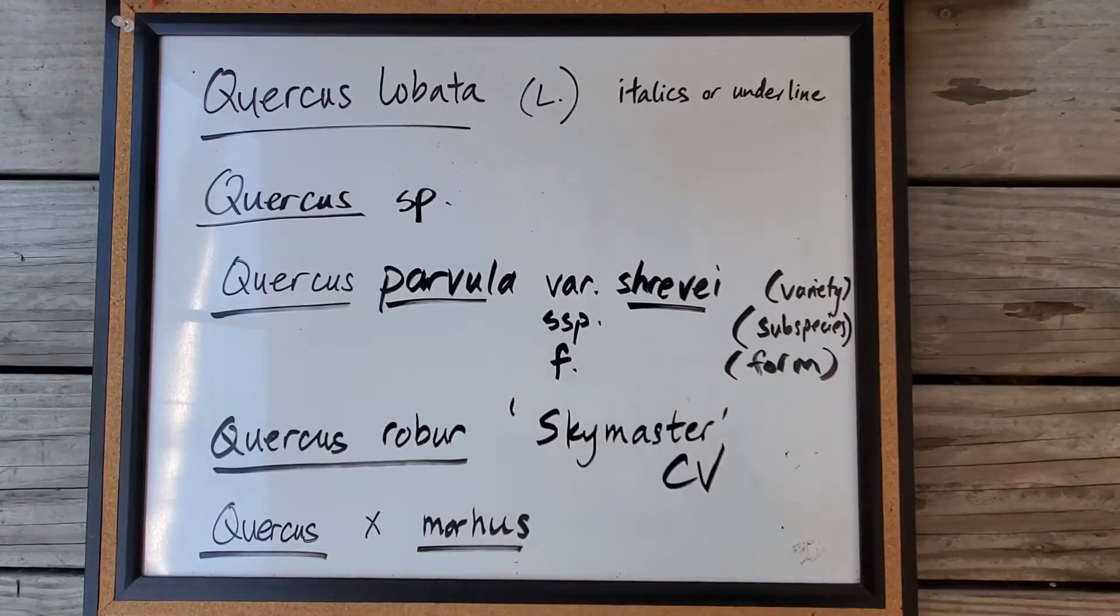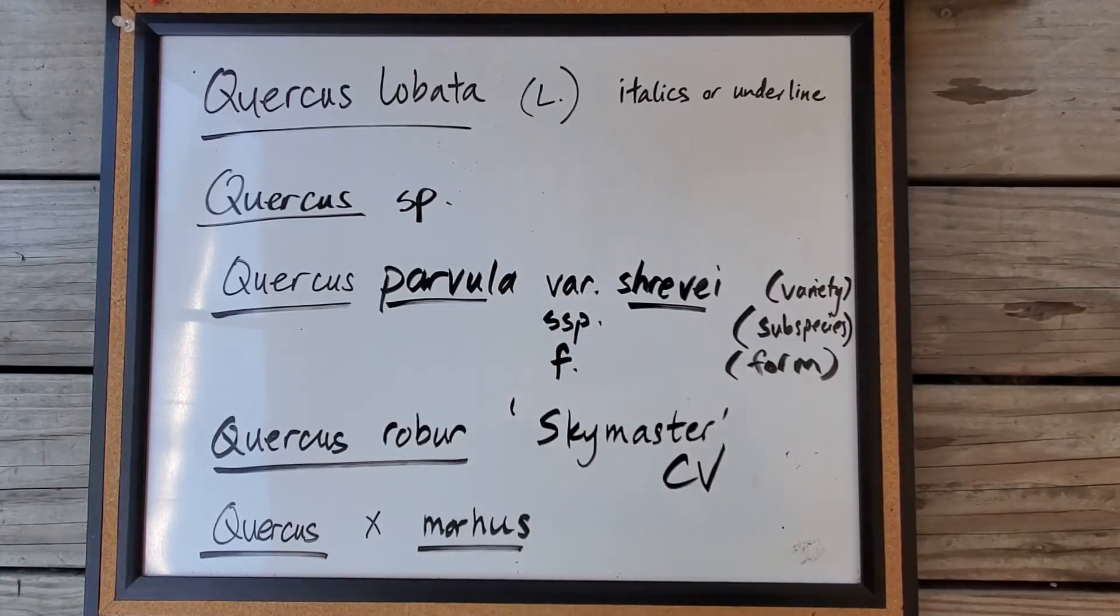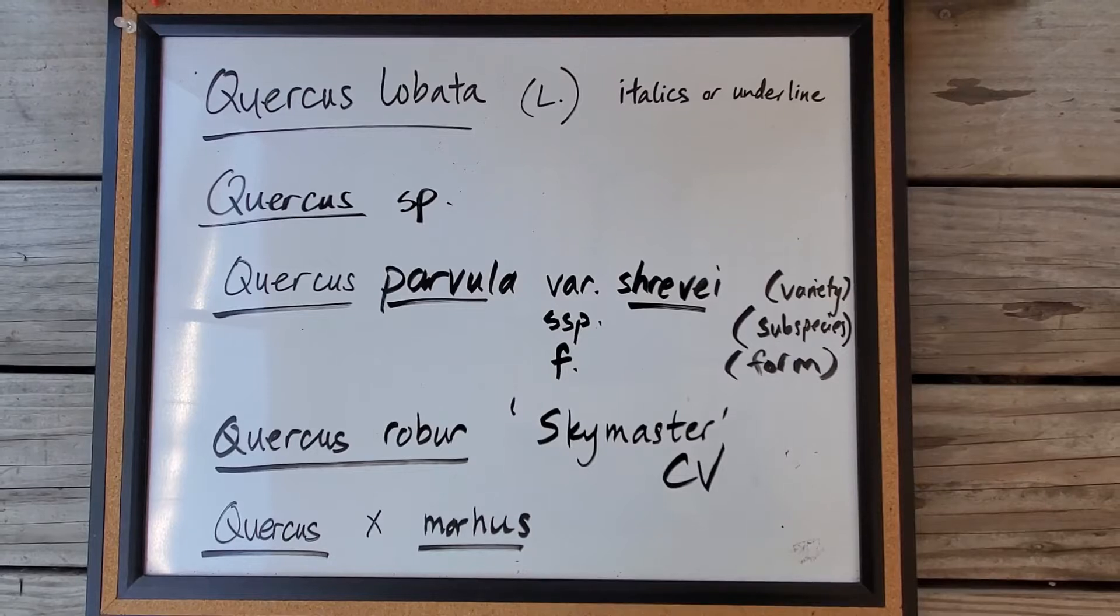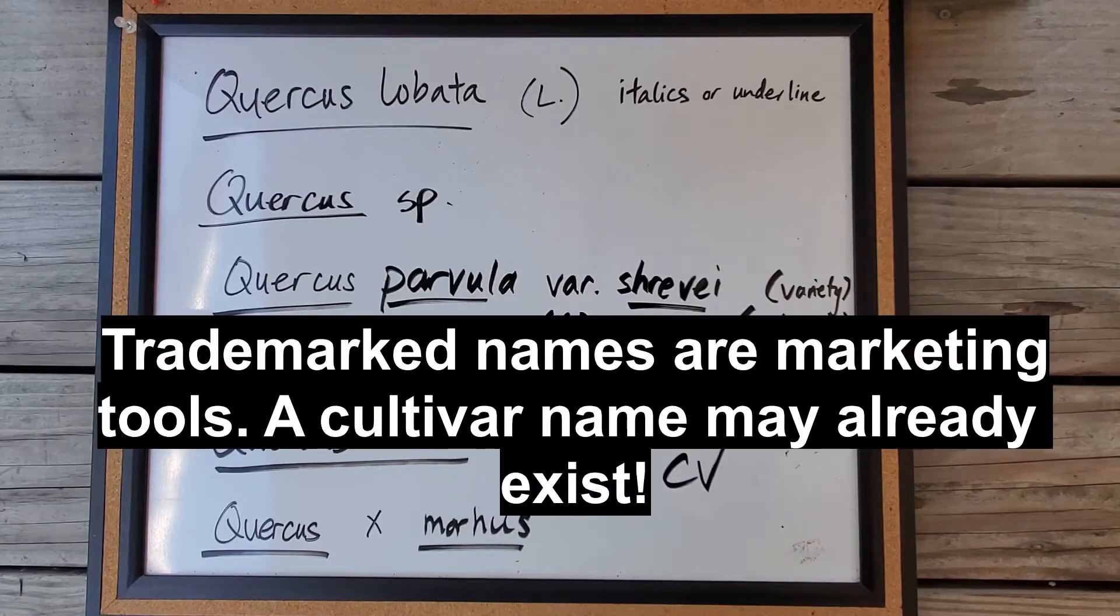There are supposedly trademarked names, and this is referenced in the study guide, but trademarks are basically used for marketing, and there's a lot of confusion and discrepancies with them. Sometimes they're applied over existing cultivar names, so if you see a trademark name, just know that it's for marketing purposes.